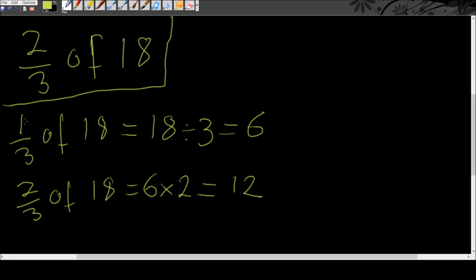Step by step recap: we wanted two-thirds of 18, so we found one-third of 18, which was 18 divided by 3 giving us 6. Then we doubled it because we're looking for two-thirds, giving us our answer of 12.